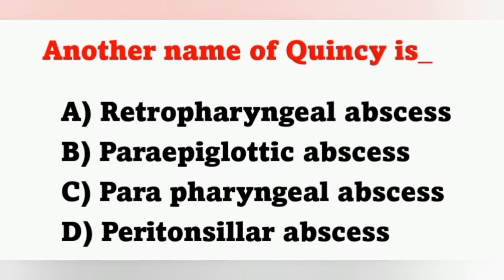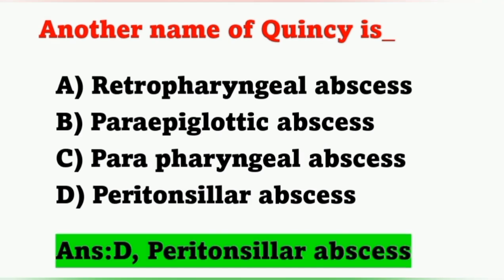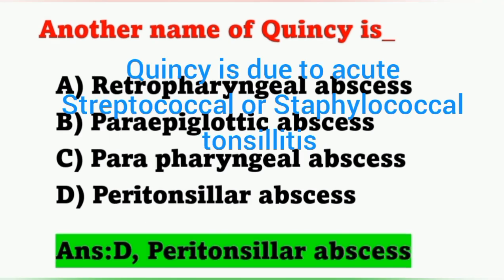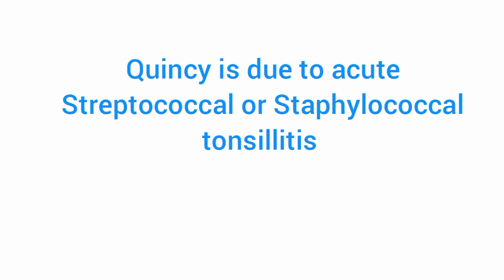Another name of Quinsy is — option A: erythropharyngeal abscess, option B: paraepiglottic abscess, option C: parapharyngeal abscess, option D: peritonsillar abscess. Quinsy (Q-U-I-N-S-Y) means peritonsillar abscess, so option D is the correct answer. It is mainly due to acute streptococcal or staphylococcal infection of the tonsils, which is known as tonsillitis.